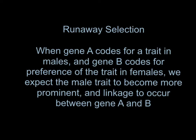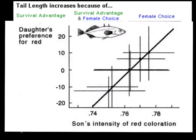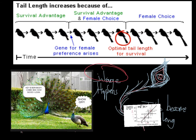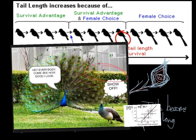Runaway Selection is when Gene A codes for a trait in males, and Gene B codes for a preference of the trait in females. We expect the male trait to become more prominent and linkage to occur between Gene A and B. This leads to an increase of the female population who prefer that trait and the males who express that trait. There are many examples of females choosing mates based on less useful traits — for example, song complexity, or even traits detrimental to survival, such as brightly colored plumage, as in the case of the peacock.